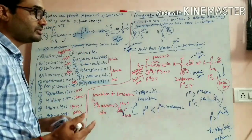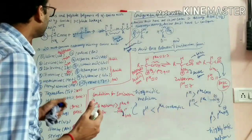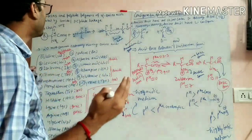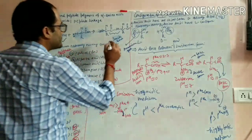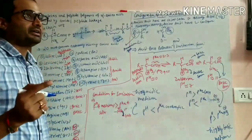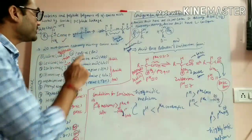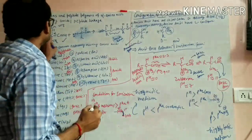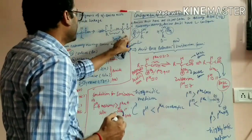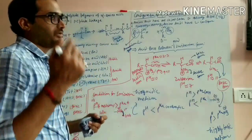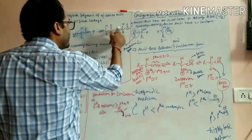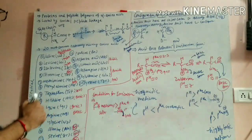Proteins are poly amino acids — many amino acids combined together through a peptide linkage or amide bond to form a protein molecule. In a protein molecule, there are 40 to 100 such amino acids repeated again and again. When two amino acids combine, that is a dipeptide; three amino acids form a tripeptide, and so on. The bond joining them is called a peptide bond or amide bond.